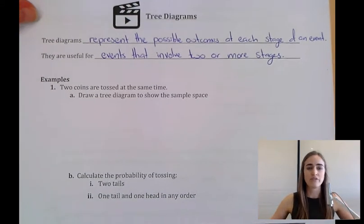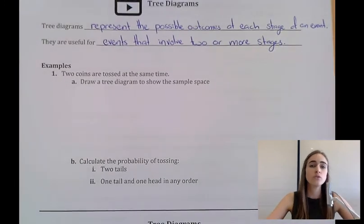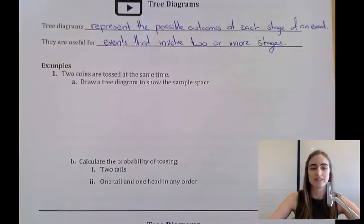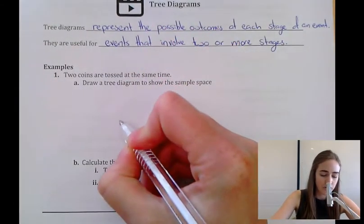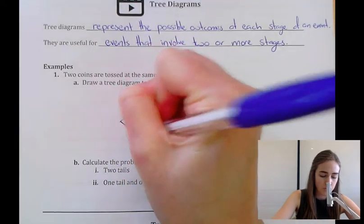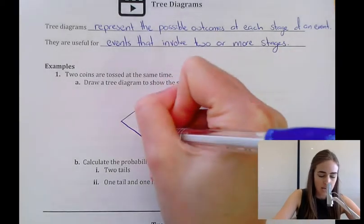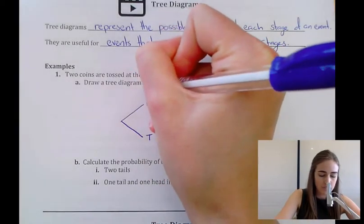Let's have a look at some examples. Our first one says that two coins are tossed at the same time, and we want to draw a tree diagram to show the sample space. So on our first flip of a coin, we have two options. We can either get heads or tails. So this is our first flip.